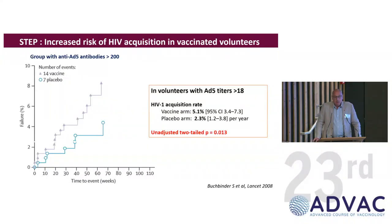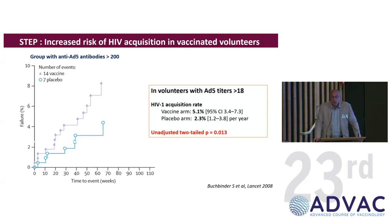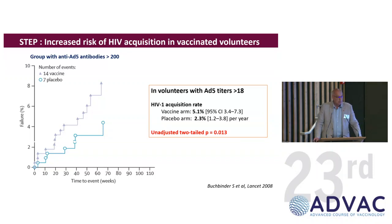Unfortunately, in 2009, the community was shocked when the DSMB prematurely interrupted this trial because of an increased risk of HIV acquisition in the vaccinated arm compared to the control arm. This was not related to the HIV immunogen itself. The mechanism suggested, though not completely validated, is that the CD4 response sustained in vaccinated individuals against the adenovirus components may represent a preferred target for HIV replication. This was confirmed in non-human primate evaluations.